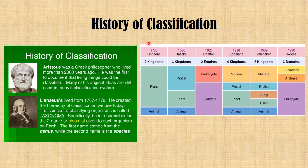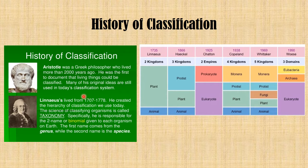Now we will look at the history of classification. The first person we know of who attempted to classify living organisms was Aristotle, a Greek philosopher who lived more than 2,000 years ago. He was the first to document that living things could be classified. He classified living things based on their habitats, calling some organisms land organisms, air organisms, or water organisms. He also classified plants.